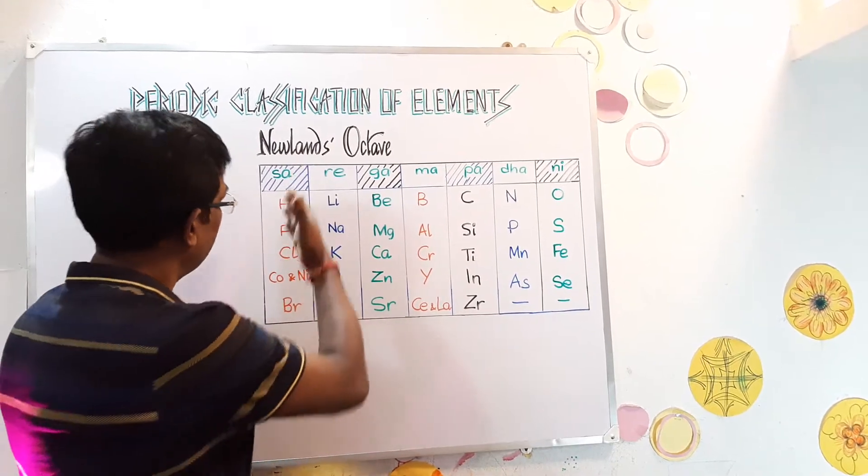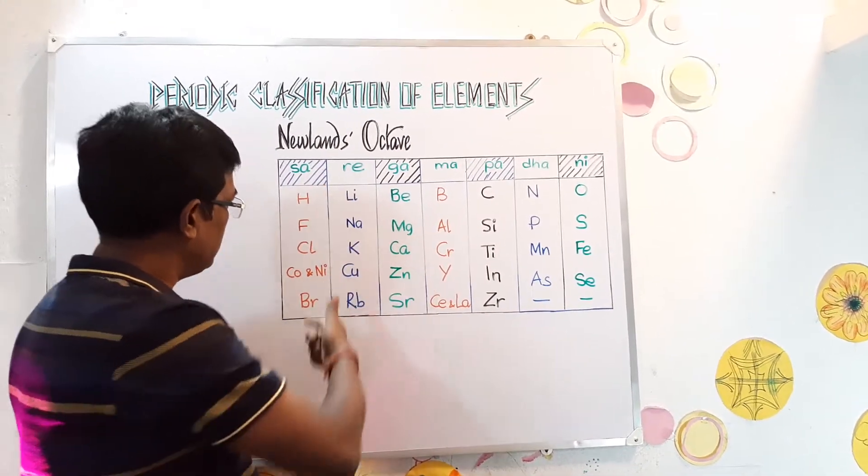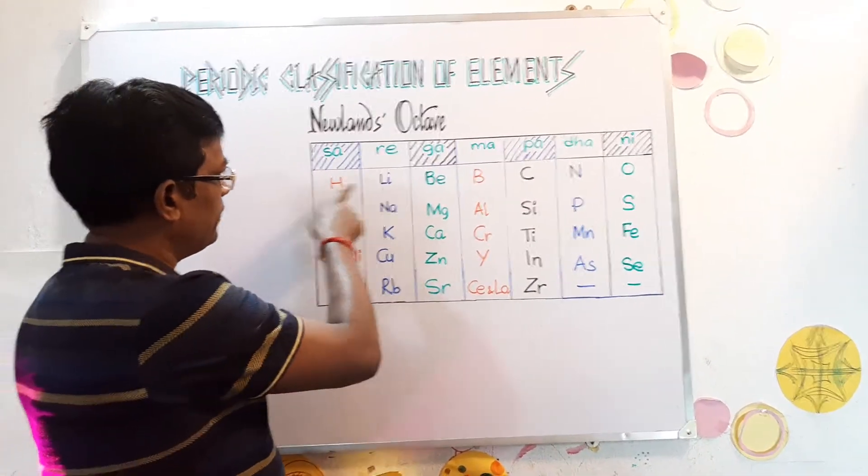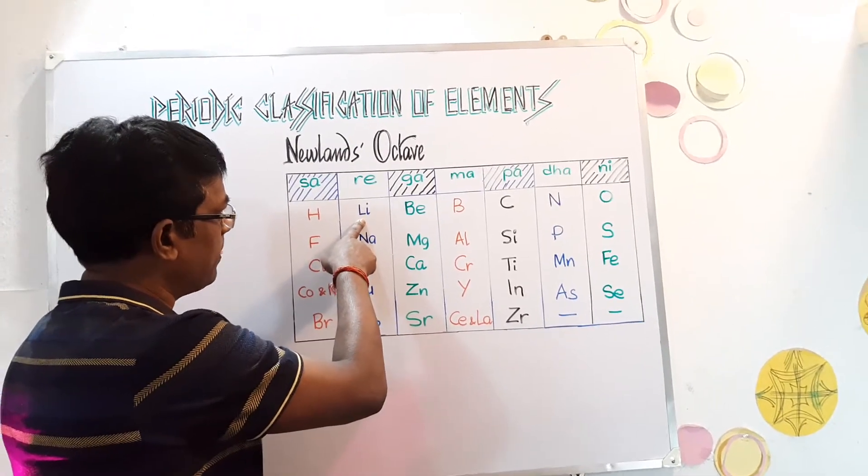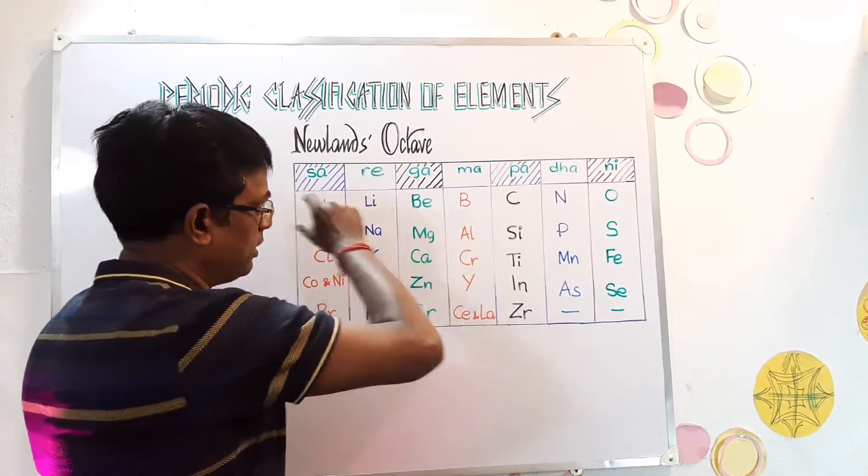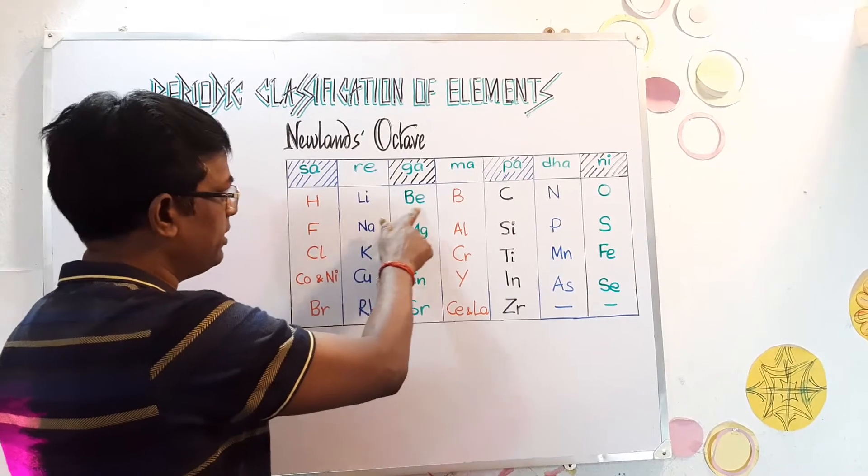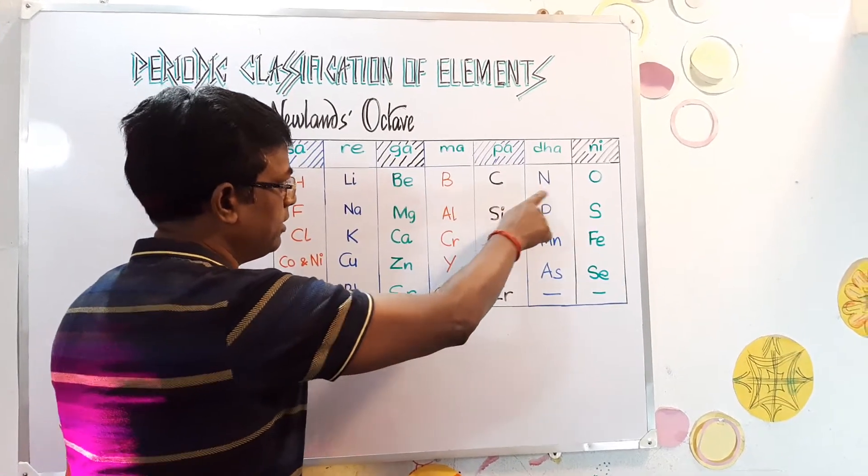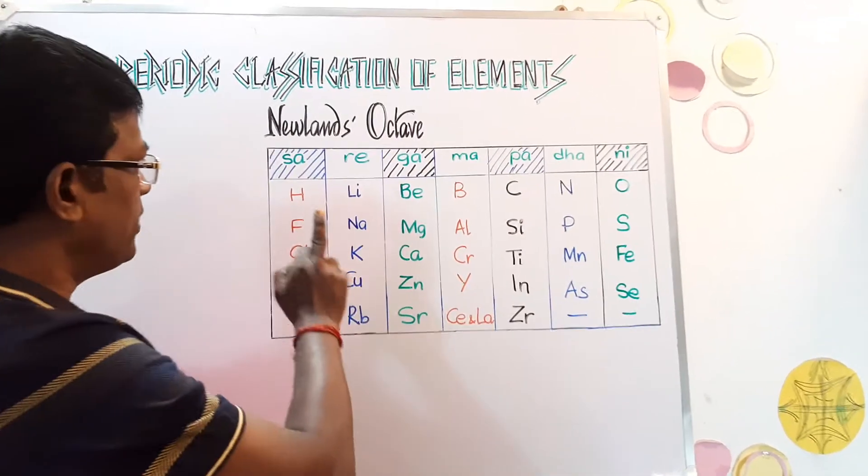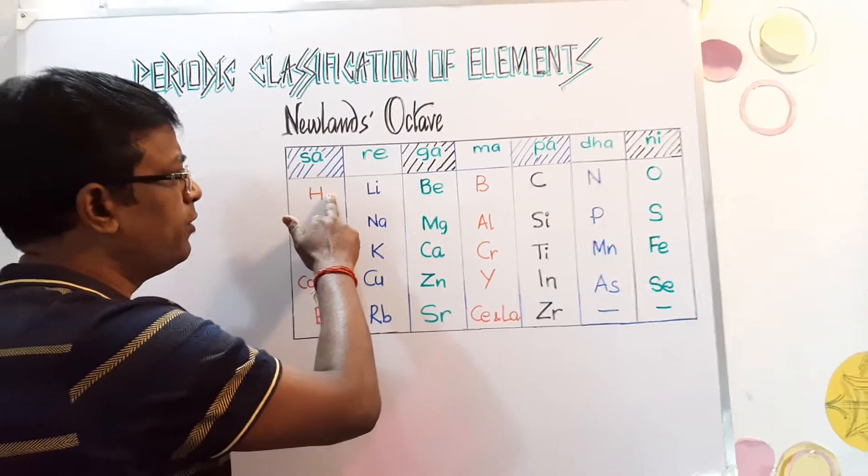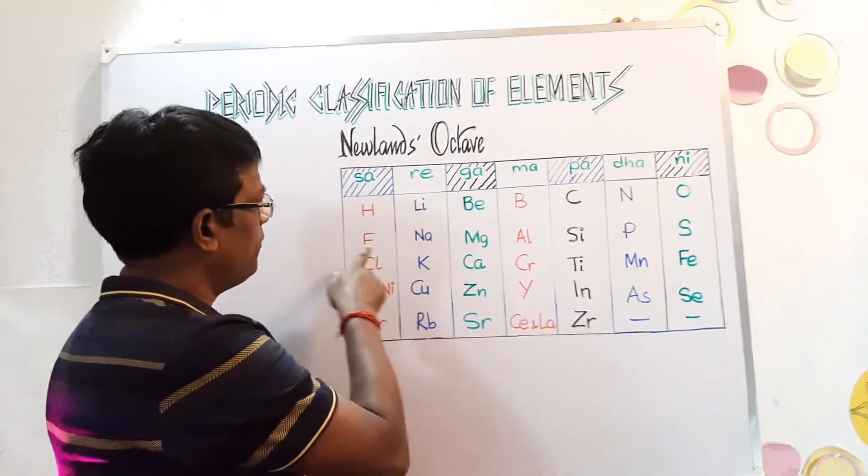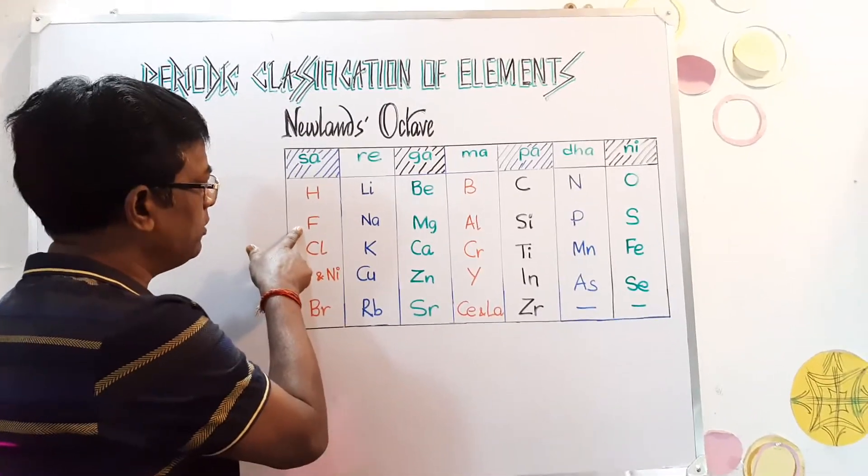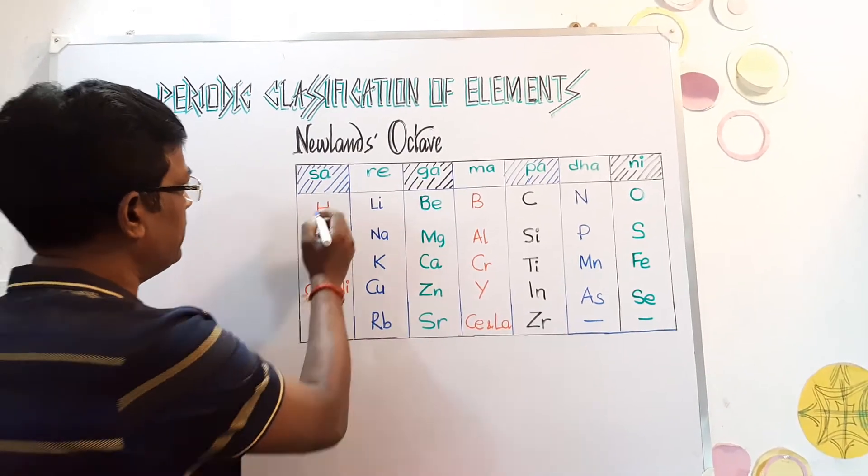Similarly here in the first note like Sa, Hydrogen will go, Lithium will go to the second, gradually we'll place them Hydrogen, Lithium, Beryllium, Boron, Carbon, Nitrogen, Oxygen. Now Hydrogen is the first element here and Fluorine if you count is the 8th element.